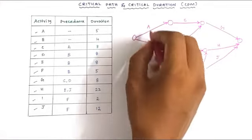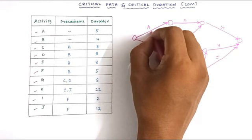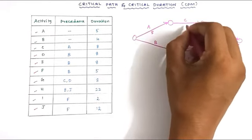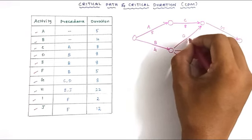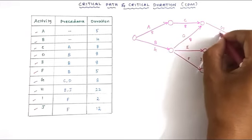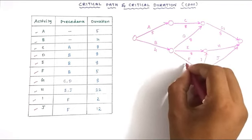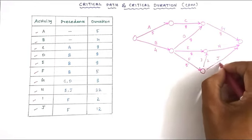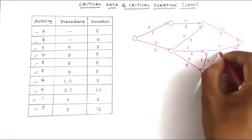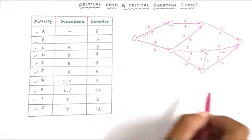In the corresponding activities, we put the duration values: A = 5, C = 8, B = 4, D = 8, G = 8, E = 8, F = 5, I = 2, J = 12, and H = 22. This is how we draw the network path.